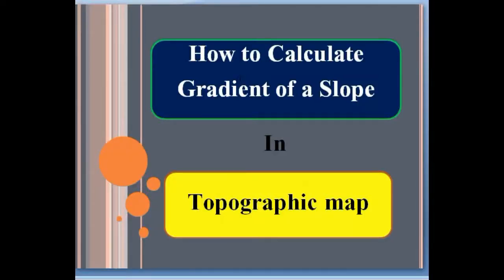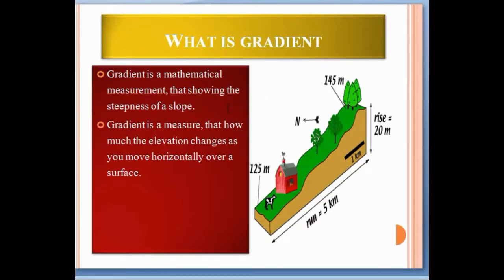Hello, today we learn how to calculate gradient of a slope in a topographic map or contour map. First of all, we must know what gradient actually is. Gradient is a mathematical measurement showing the steepness of a slope. Gradient is a measure of how much the elevation changes as you move horizontally over a surface.